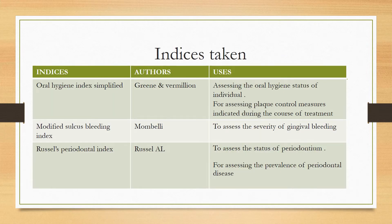Coming to the indices taken: the most important indices for the case sheet are the Oral Hygiene Index Simplified, the Modified Sulcus Bleeding Index, and Russell's Periodontal Index. These help to assess oral hygiene status, severity of gingival bleeding, and the status of the periodontium, which might predict the outcome of treatment.